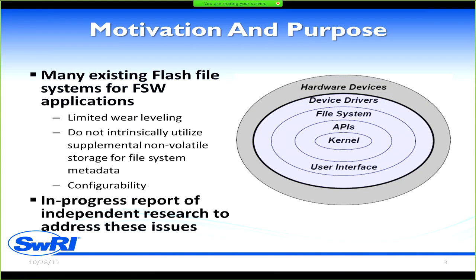Why did we feel like we needed to make yet another Flash file system? There are already a lot of file systems targeting Flash devices for embedded flight software. One principal reason is they have somewhat limited wear leveling — some variants have none at all — and none of them have the ability to intrinsically utilize supplemental non-volatile storage to store critical file system metadata. It all lives on one Flash device, which is a single point of failure, and in a high-reliability environment that can be an issue.